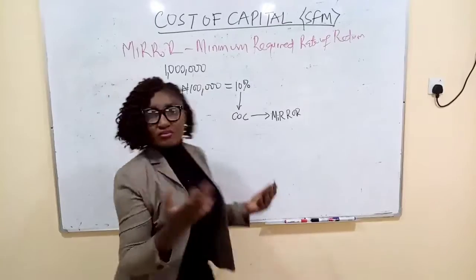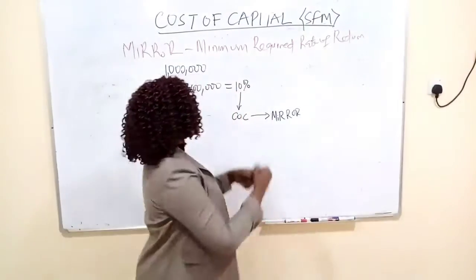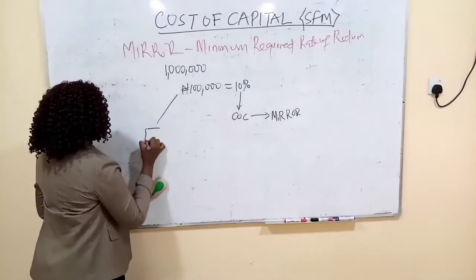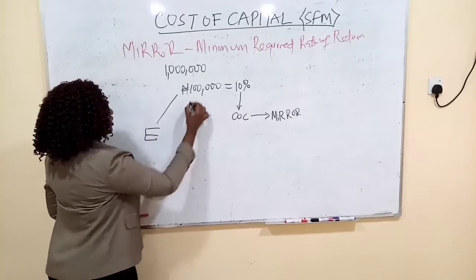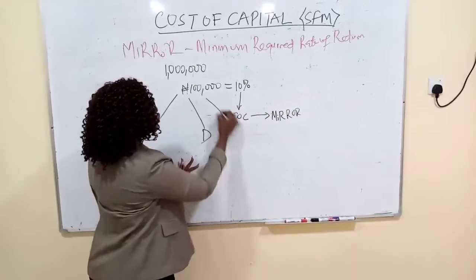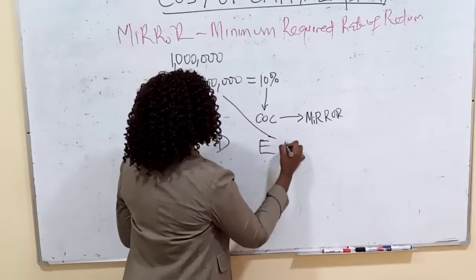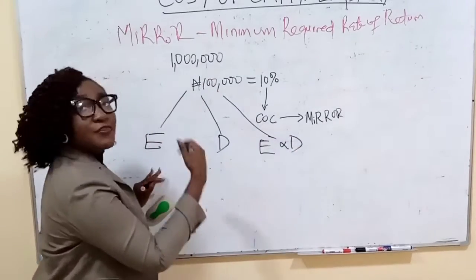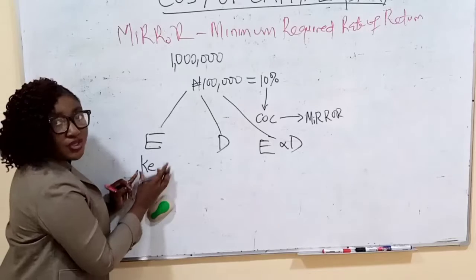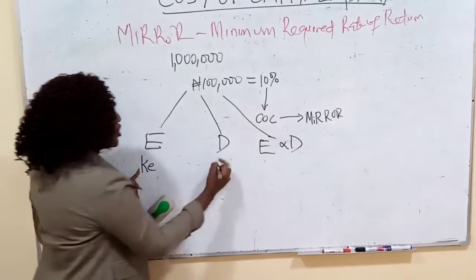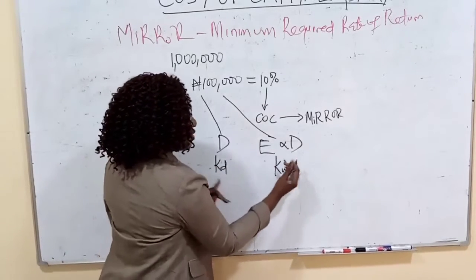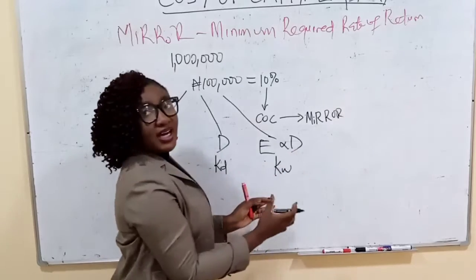Now, what is capital? Capital can be in the form of equity, or it could be in the form of debt, or in the form of preference shares, and it could also be a combination of equity and debt. This means you can determine the cost of equity, cost of debt, and you can determine the cost of a combined capital.